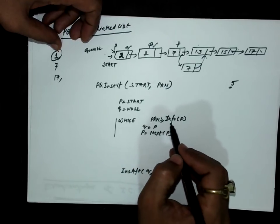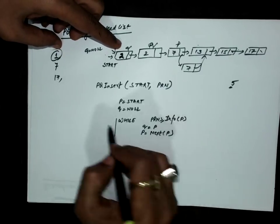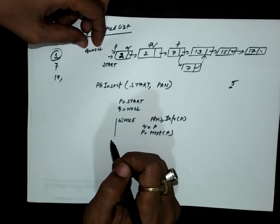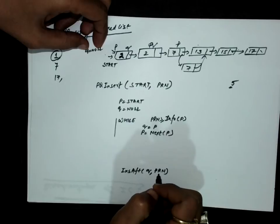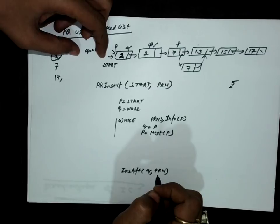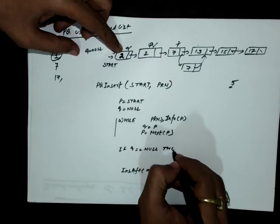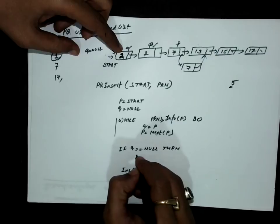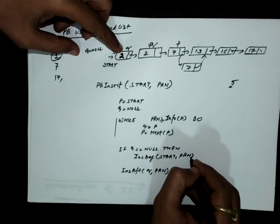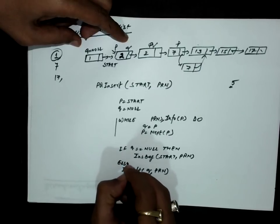For example, if the list starts with 2 and I want to insert 1, then 1 is not greater than or equal to info(P), so I exit the loop immediately and Q is still null. If Q is null, 'insert after Q' means nothing. I must insert at the beginning instead. So after the loop: if Q is null, insert PRN as the first node; otherwise, insert after Q.